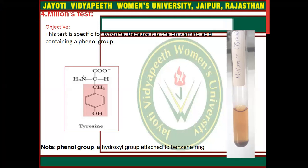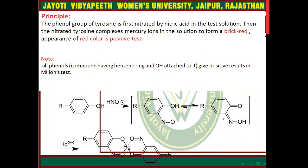This is the structure of tyrosine and this is the result for the Millon test. If tyrosine is present, this color of solution will appear. The phenol group of tyrosine is first nitrated by nitric acid in the test solution, and then the nitrated tyrosine complexes mercury ions to form a brick red color, which is a positive test. All phenols give positive results in the Millon test.